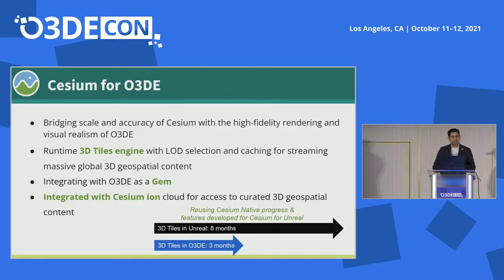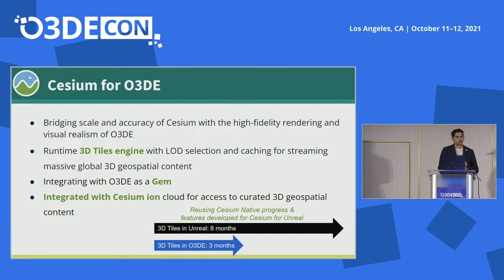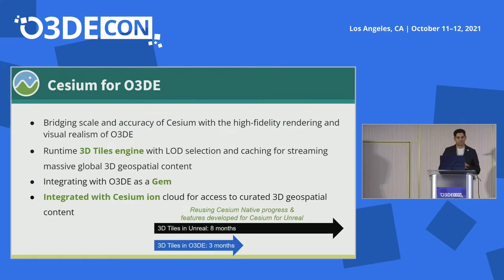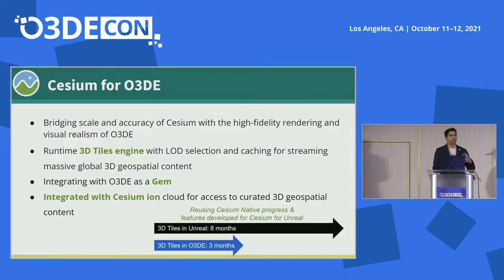Cesium Native is allowing us to handle all the 3D Tiles engine work — the LOD selection, the caching, the streaming — and it's almost ready to use for O3DE. We are integrating it as a gem, and we expect to open a pull request in the next few weeks. Because we've done this with Unreal over the past many months, we are able to reuse all of that tech, and the path to an MVP becomes a lot quicker. The first 3D tileset we saw when doing Cesium for Unreal took eight months. The first 3D tileset in O3DE took three months — more than twice as fast — because we're reusing most of the tech. If I were to rough ballpark how much of Cesium for O3DE is O3DE-specific code versus Native code, I'd put it at 80/20 or 85/15, where most of the code is Native.